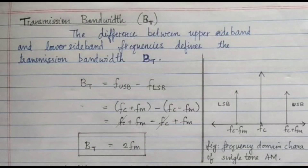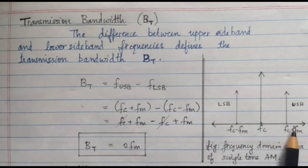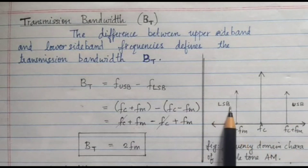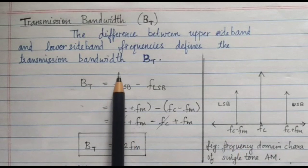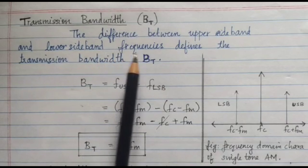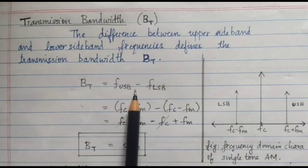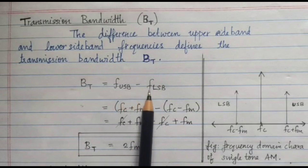Transmission bandwidth. In the frequency domain, for a single-tone AM signal, the carrier frequency is FC, the upper sideband is located at FC + FM, and the lower sideband is located at FC − FM. The transmission bandwidth is the difference between the upper sideband and lower sideband frequencies, so we can write BT = FUSB − FLSB.